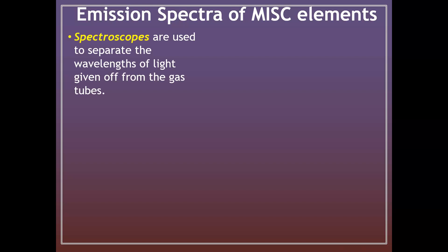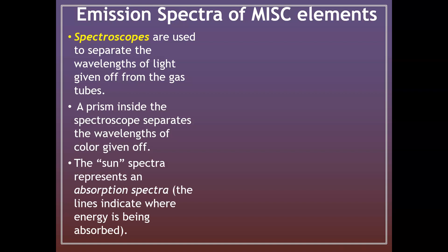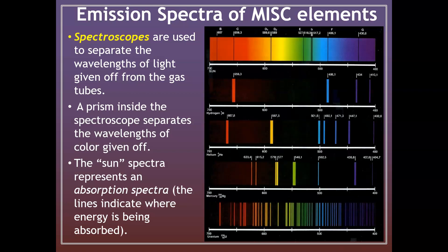Here is some emission spectra information. You may do a lab on this using something called a spectroscope, which is essentially a fancy prism that helps us determine the lines given off — it has an eyepiece and helps separate the wavelengths of light given off by the gas. The sun represents an absorption spectrum — if you look at the sun using a spectroscope, the lines indicate where energy is absorbed. On the top is the sun's absorption spectrum, and on the bottom is the emission spectrum. We've got spectra shown here for hydrogen, helium, mercury, and uranium.